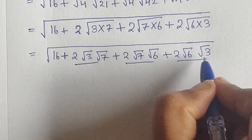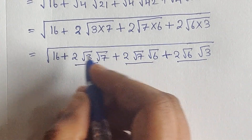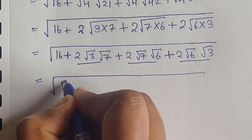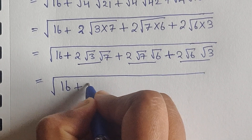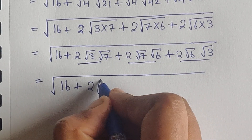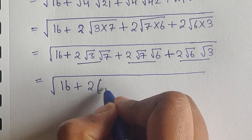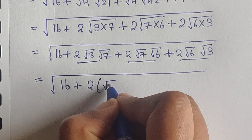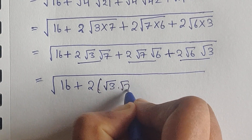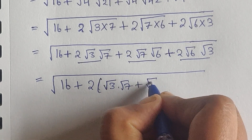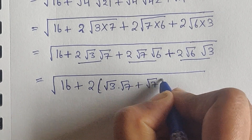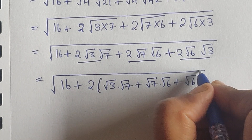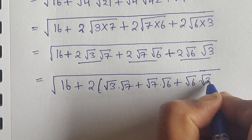We can see that these three terms have 2 as a common factor. Taking 2 out as common, inside we have: square root of 3 times square root of 7, plus square root of 7 times square root of 6, plus square root of 6 times square root of 3.